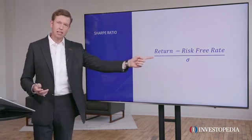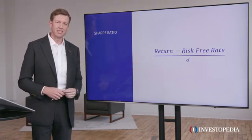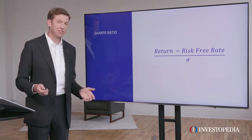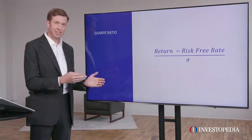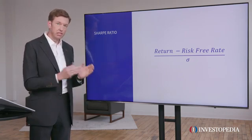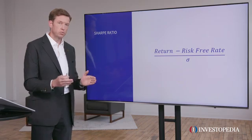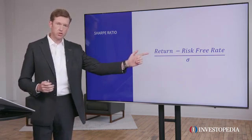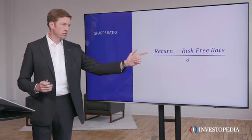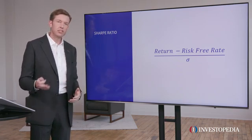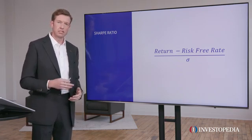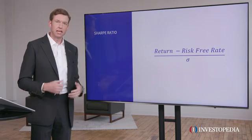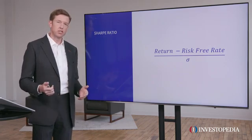In the denominator, that symbol stands for standard deviation — another way to think about it is volatility. And remember, volatility equals risk. So we're taking the adjusted return of this particular ETF and dividing it by its level of risk, or its standard deviation. That gives us our Sharpe ratio.